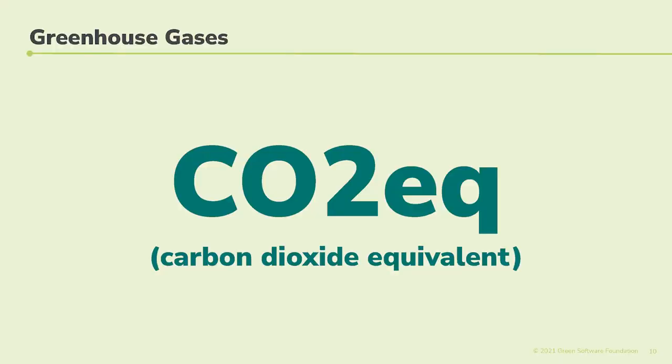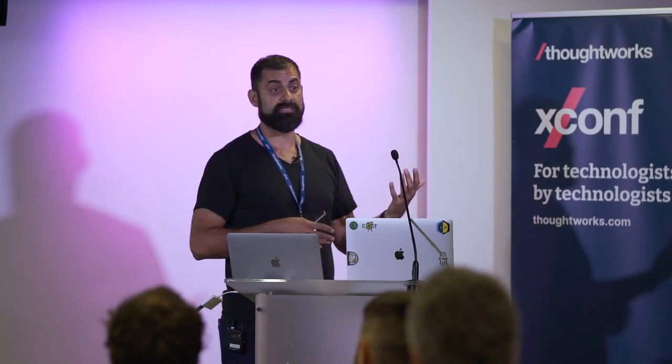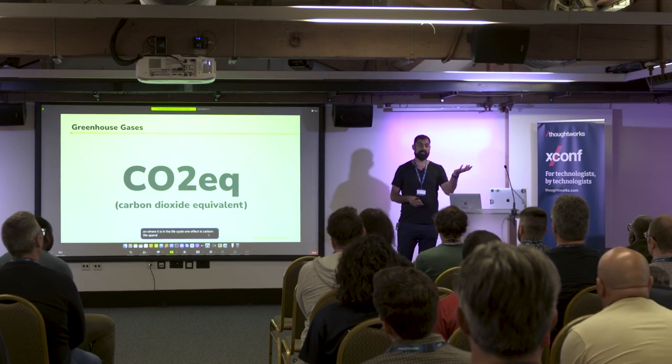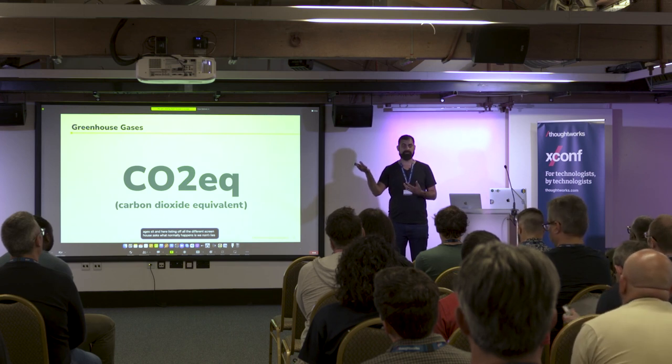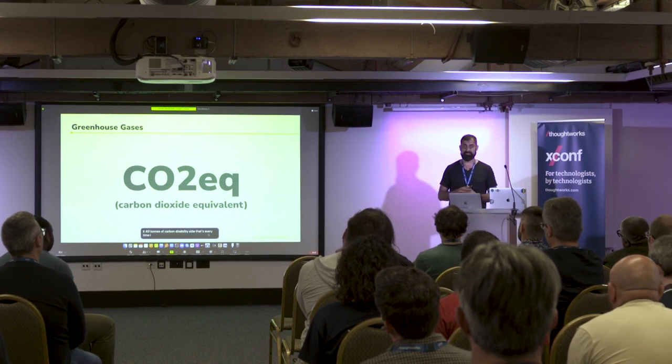People always talk about carbon alongside greenhouse gases. There are loads of different types of greenhouse gases with warming potential — carbon dioxide is the most common, but there's also methane, which has about 40 to 100 times the warming effect of carbon depending on where it is in its life cycle. Rather than listing all the different greenhouse gases, we normalize everything to something called carbon dioxide equivalent. So one ton of methane we call 40 tons of carbon dioxide equivalent. That's why we just always talk about carbon — whenever I say carbon, I'm actually talking about all greenhouse gases in the atmosphere.